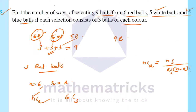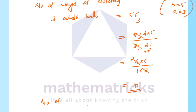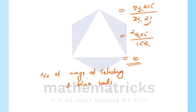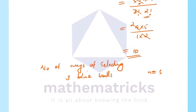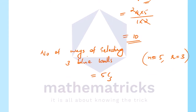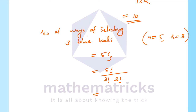Now for the last selection: 3 blue balls. Total number of blue balls is 5. Number of ways of selecting 3 blue balls: n equals 5, r equals 3, that is 5C3. Equal to 5 factorial divided by 3 factorial into 5 minus 3 factorial. After cancelling, numerator is 4 into 5, divided by 2 factorial equals 10. So there are 10 ways to select 3 blue balls.